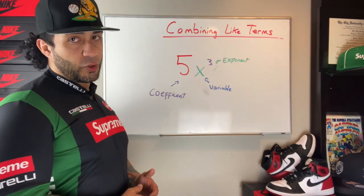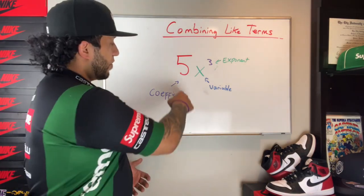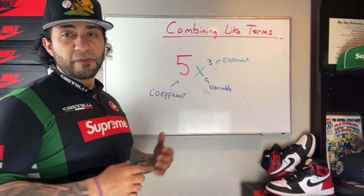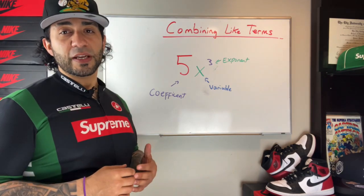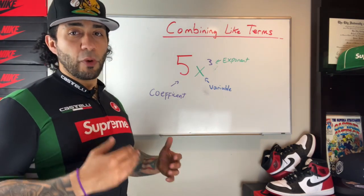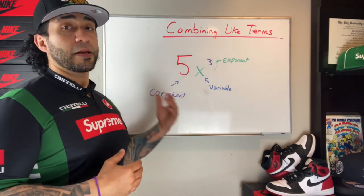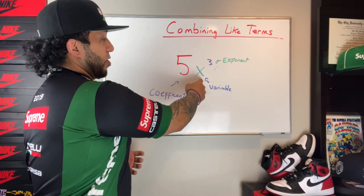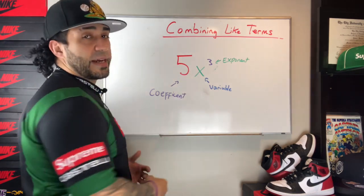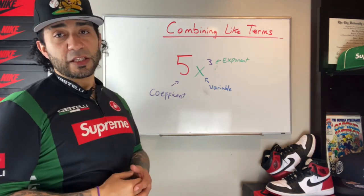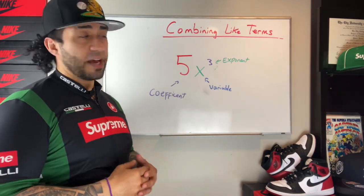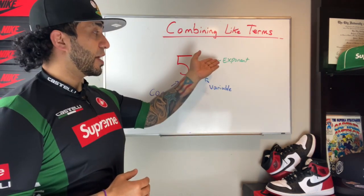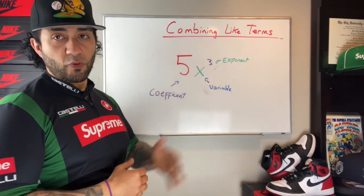A term can have a few parts to it. You have what's called the coefficient — a fancy way of saying the number that's being multiplied to the next part of a term — the variable. And then last but not least, some of our terms can have an exponent, which is a number that the base is being raised to.